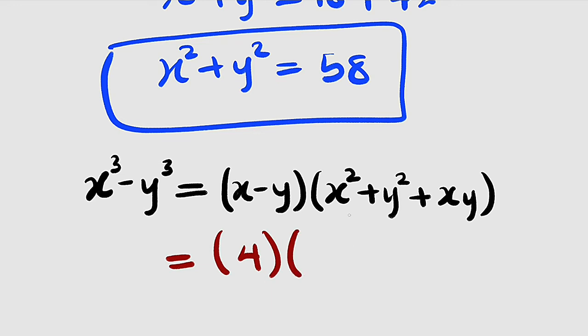Then multiply by this is now 58. So we have 58 here. Then plus xy is 21.